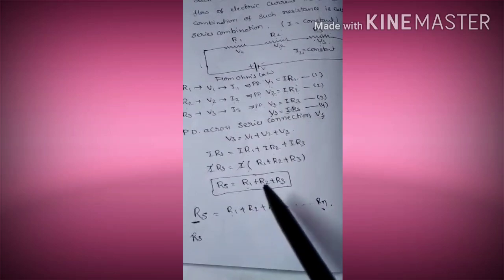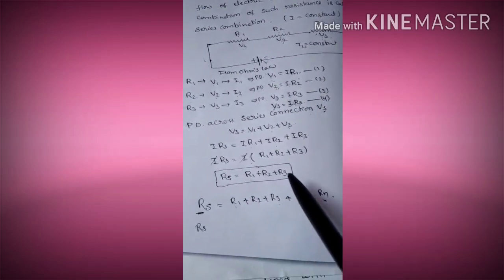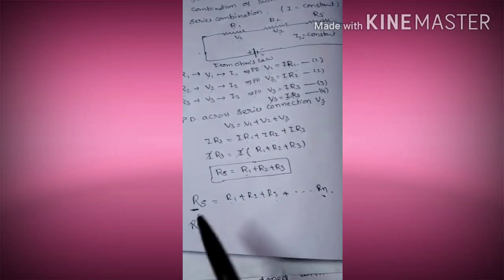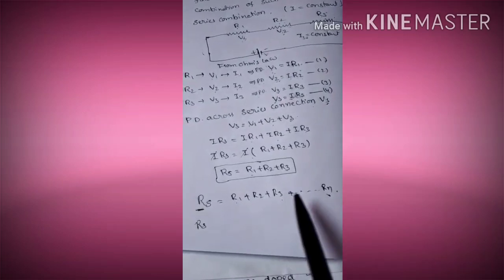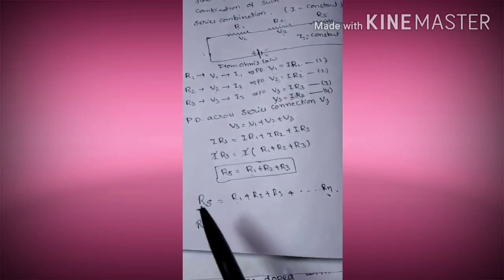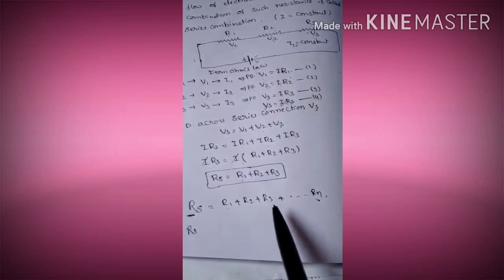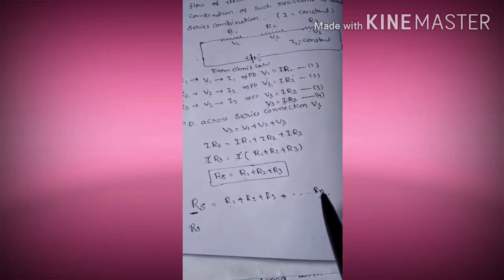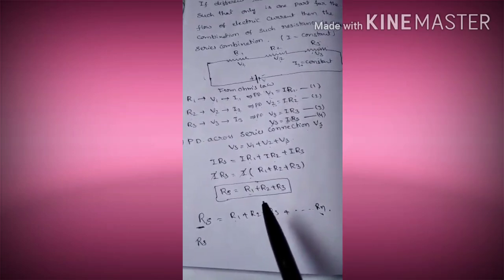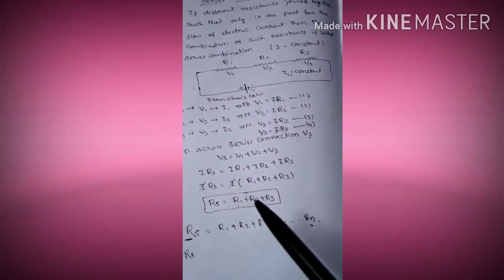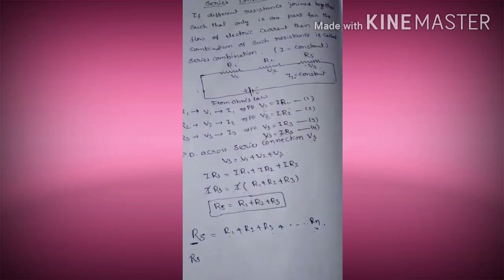In a series connection, if you are adding resistances, the formula is RS = R1 + R2 + R3. From this, we conclude that in a series connection, the total resistance increases — it is the sum of all the individual resistances.